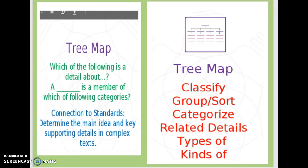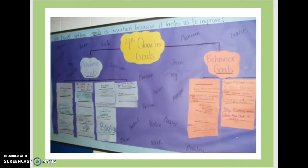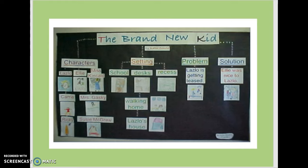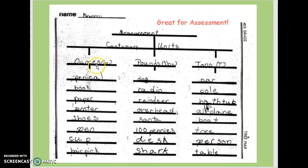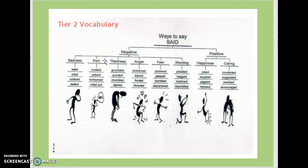The next one is a tree map — you classify, group, sort, categorize, and find types of and kinds of information. Here is one about goals: behavior goals versus academic goals. Here are all the parts of a story: characters, setting, problem, and solution. This would be great for assessment — give students all the words and have them categorize. You could differentiate by giving some kids a word bank while others do it from scratch. This is also great for connotation and denotation, or tier two vocabulary — building on word meanings and using bigger, more powerful words with tone and voice in kids' writing.